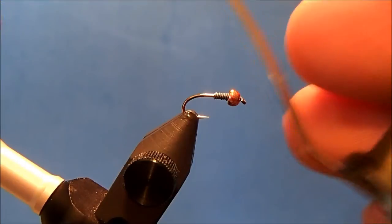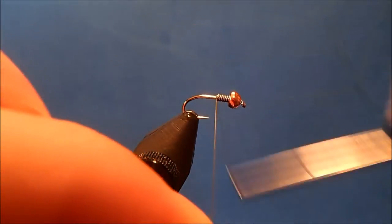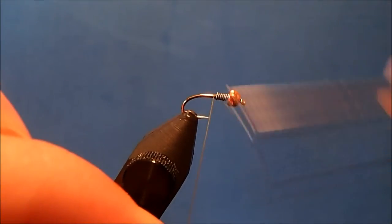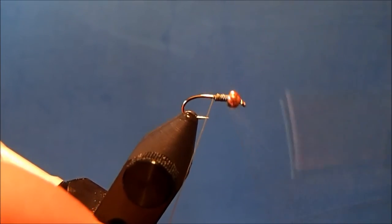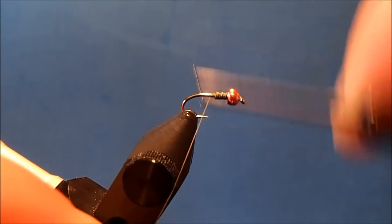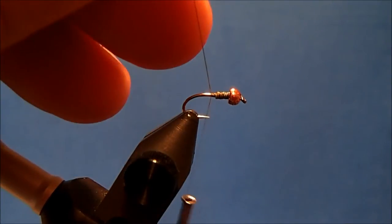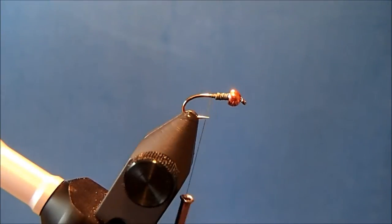The thread I'm going to use is an 8.0, and this is an olive dun. I'm going to tie everything in this green olive color family. I'll start my wraps of thread just behind the lead, wrap it up, trim the tag end.